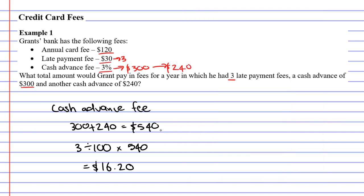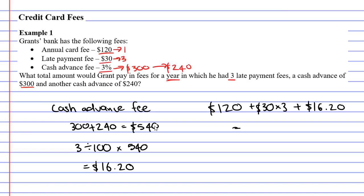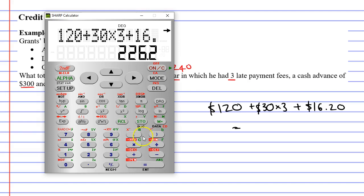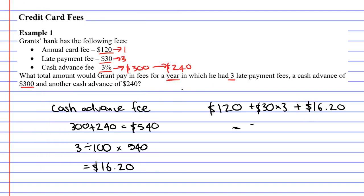Bringing our calculator up: 3 ÷ 100 × 540 equals $16.20 that the bank is going to keep because of this cash withdrawal. Now, he also has to pay fees for the whole year, which means he gets charged the annual card fee of $120 once. He also has three late payment fees: $30 × 3. Plus the $16.20 cash advance fee. So: $120 + ($30 × 3) + $16.20 = $226.20. That's what he gets charged in fees for the year.